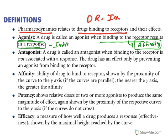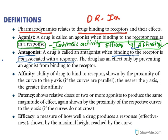It depends on the textbook — some call it intrinsic activity, some call it efficacy; both are used interchangeably. So if a drug can bind to a receptor, that property is known as affinity; if it can get a response, it is known as intrinsic activity or efficacy. An antagonist binds with the receptor — affinity is there — but there is no response, no intrinsic activity. In simple terms: agonist has affinity and intrinsic activity, whereas antagonist has affinity but no intrinsic activity.